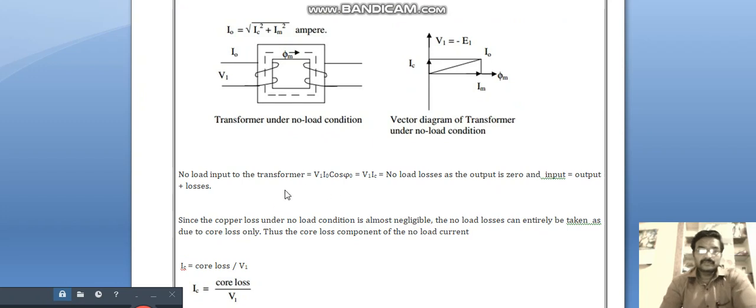No-load input to the transformer is equal to V1 I naught cos phi naught. So V1 I naught is equal to no-load losses as output is zero and input is equal to output plus losses.